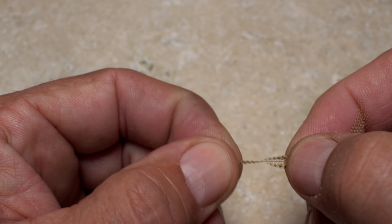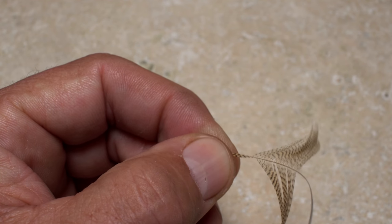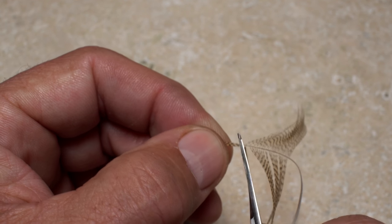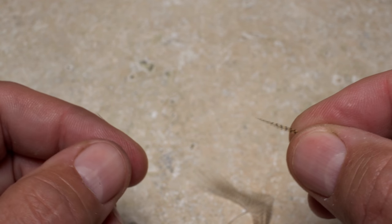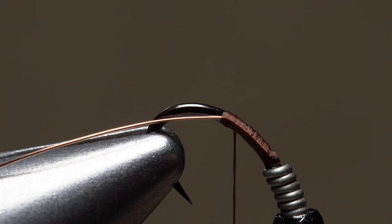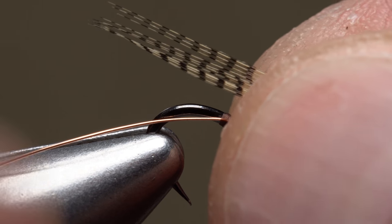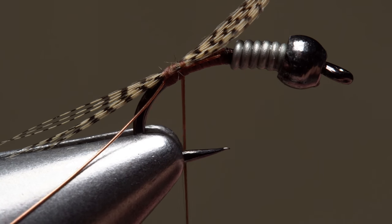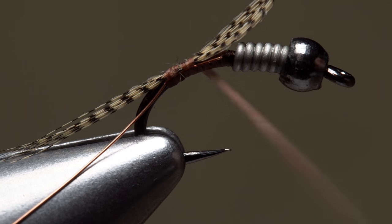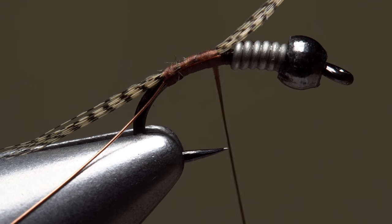For the tail, isolate the tip of a well-marked wood duck or mallard flank feather from the rest of the fibers. Snip the tip fibers off, but don't discard the rest of the feather. Measure to form a tail about a hook gap in length and secure the fibers to the top of the hook shank. You can then reorient the hook to its normal position and continue taking thread wraps to bind the fibers down up to the weight.